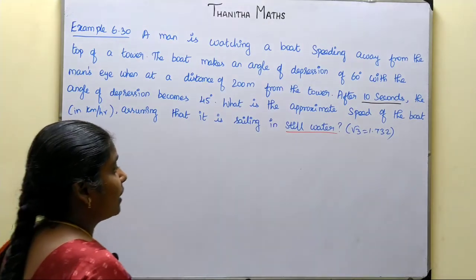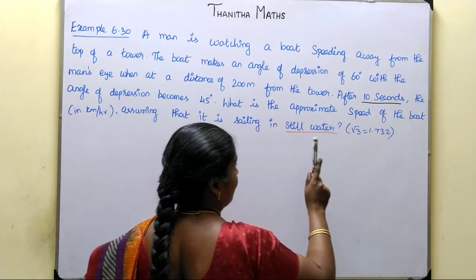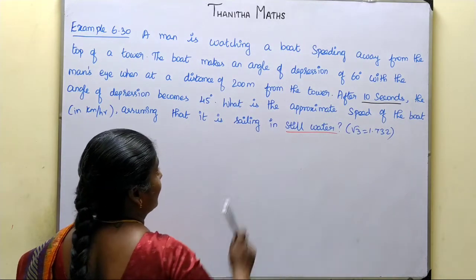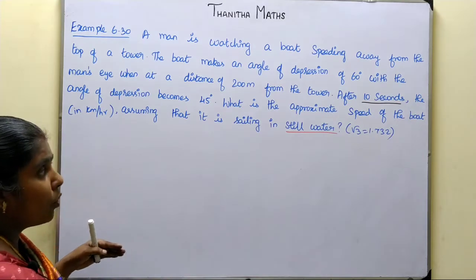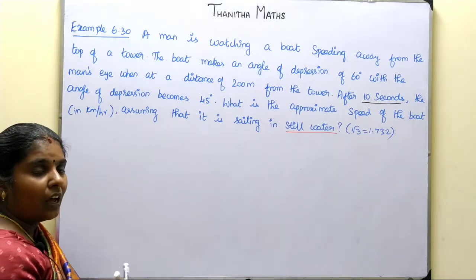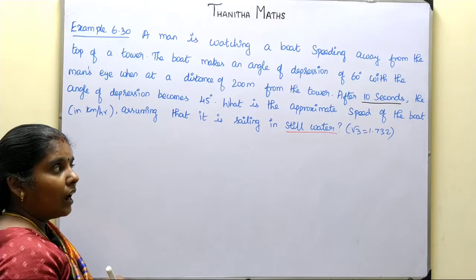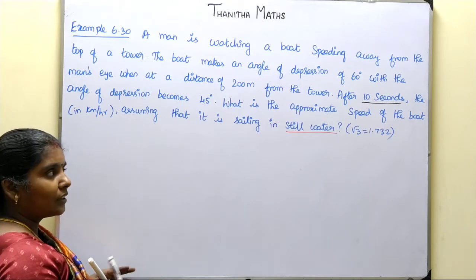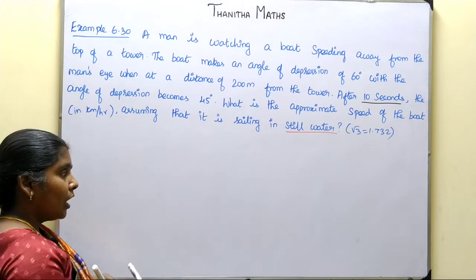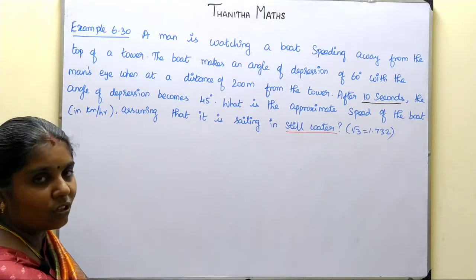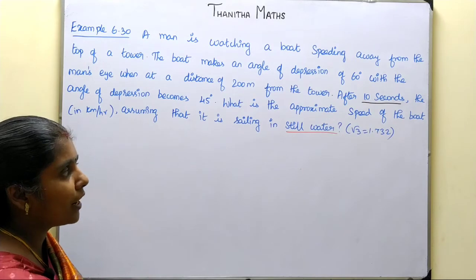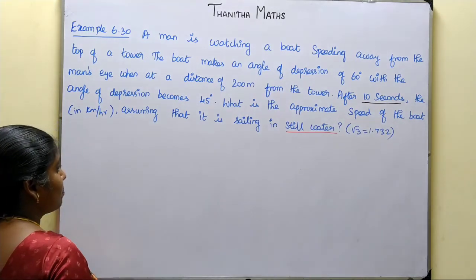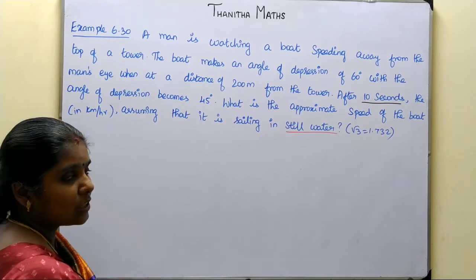The clue here is that 10 seconds is the time taken to travel. We need to find the speed of the boat in still water. When the boat is in still water, the speed of the boat is constant, so we can calculate the speed. We will use the formula: speed equals distance divided by time.